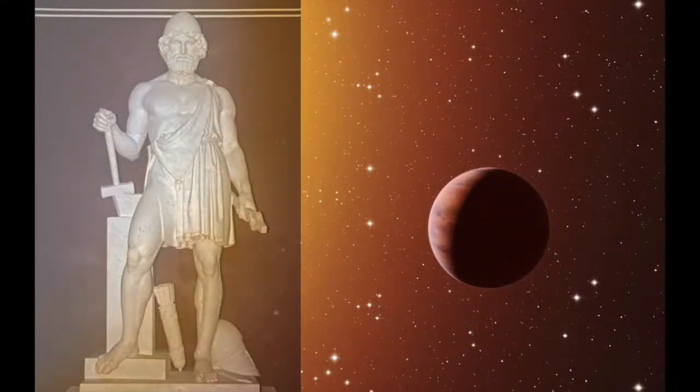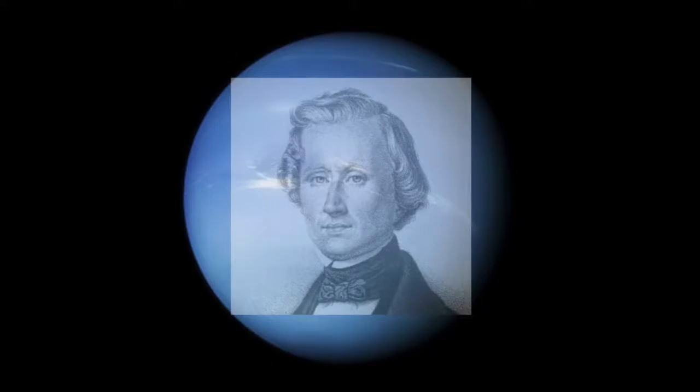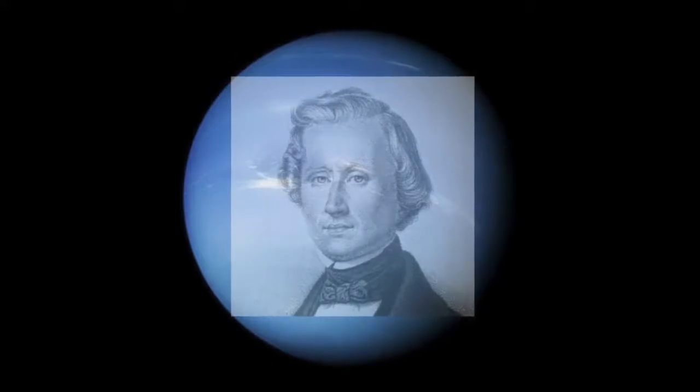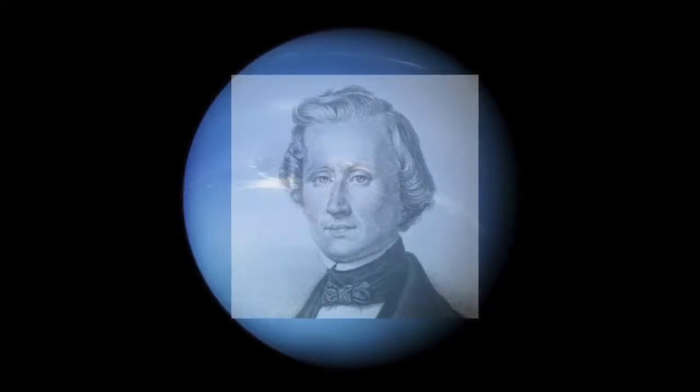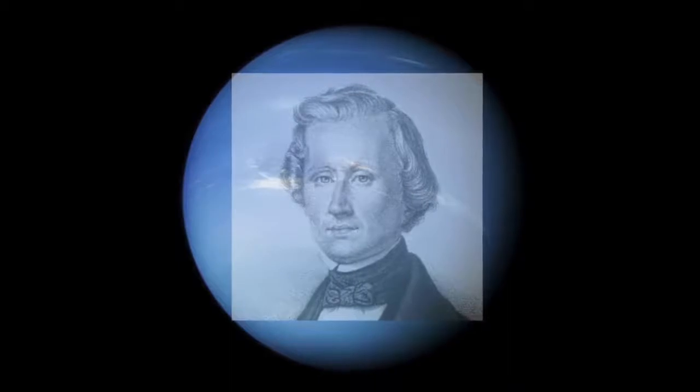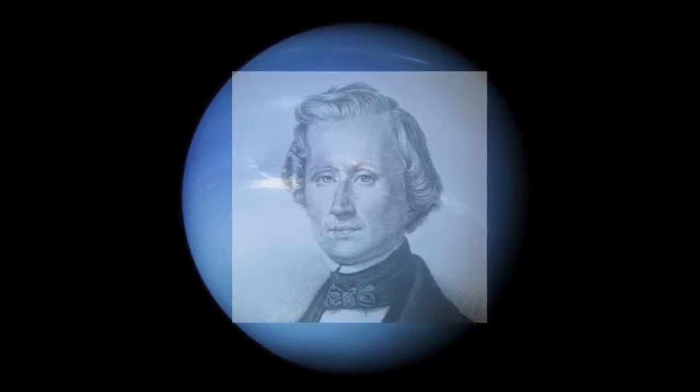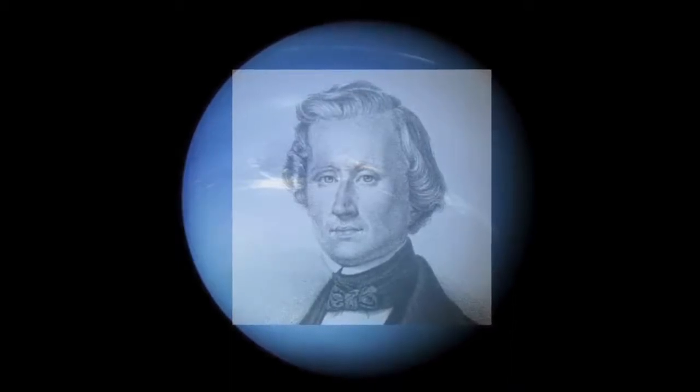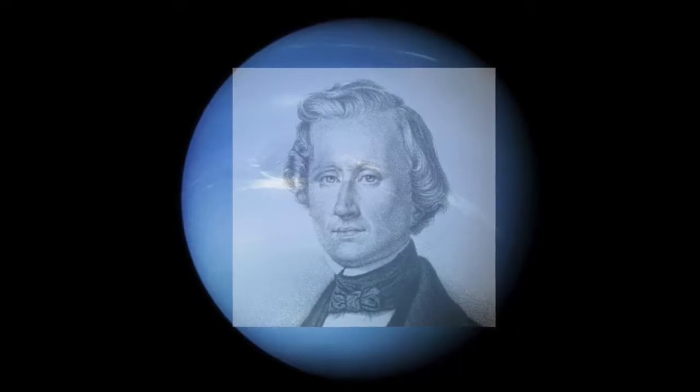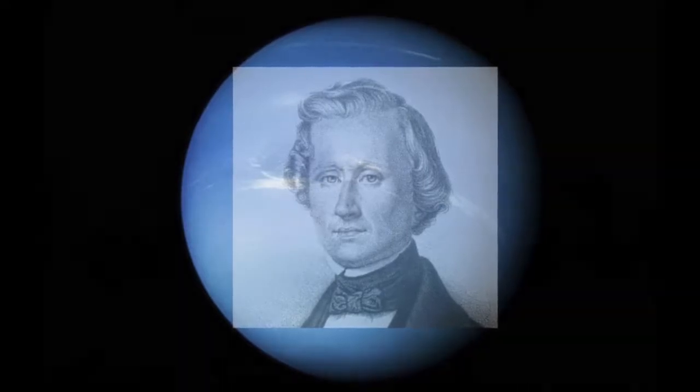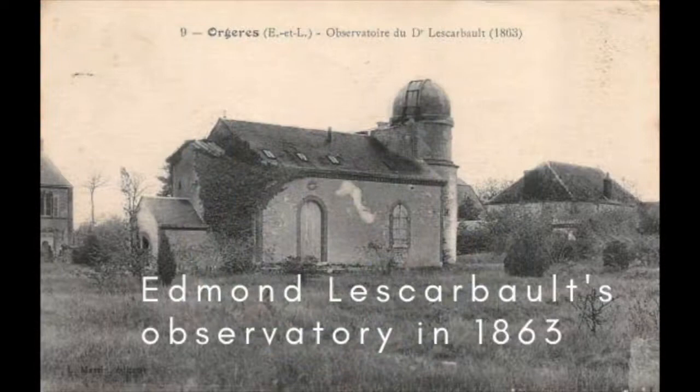Le Verrier had already played an important role in the discovery of Neptune in 1846, so his ideas about Vulcan were taken very seriously. On December 22nd, 1859, Le Verrier got a letter from a French physician and amateur astronomer, Edmond Lescarbo, who claimed to have seen an unknown planet cross the face of the Sun through his telescope.